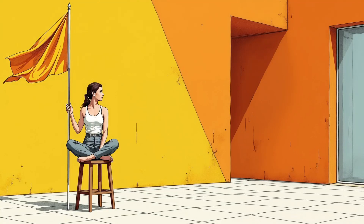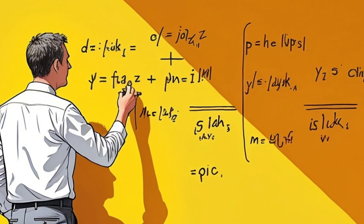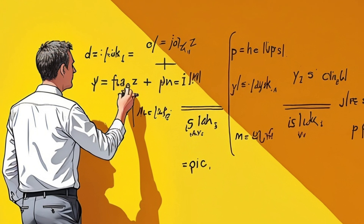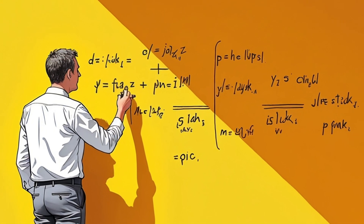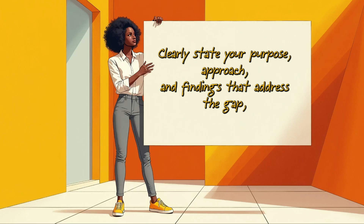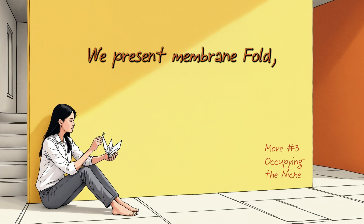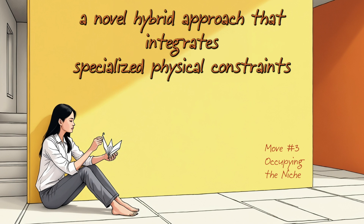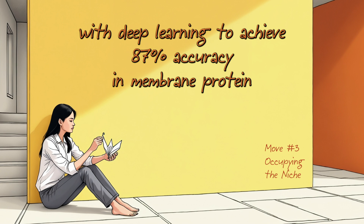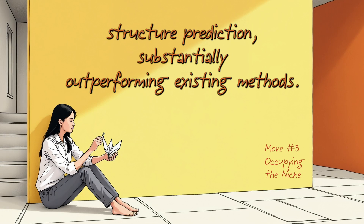Move 3: Occupying the Niche. Finally, present your research as the solution to the problem identified in Move 2. Clearly state your purpose, approach, and findings that address the gap, thereby establishing your contribution to the field. For example: We present MembrانeFold, a novel hybrid approach that integrates specialized physical constraints with deep learning to achieve 87% accuracy in membrane protein structure prediction, substantially outperforming existing methods.